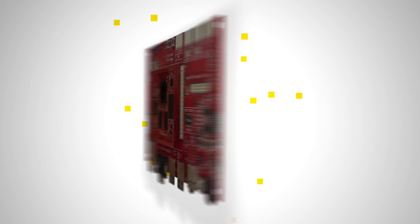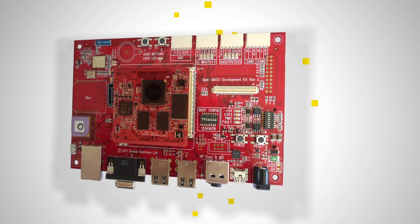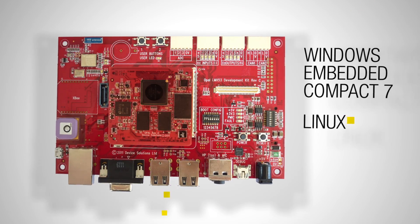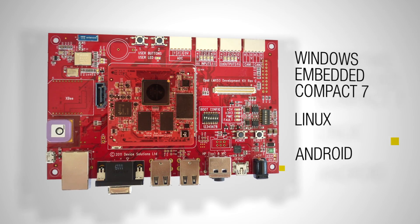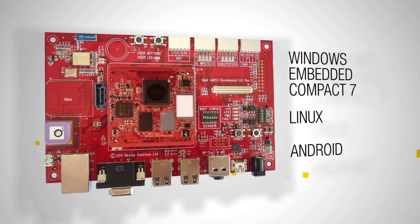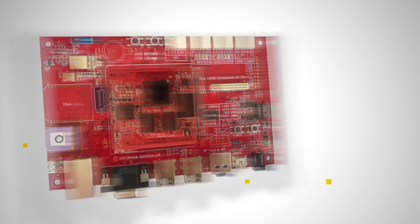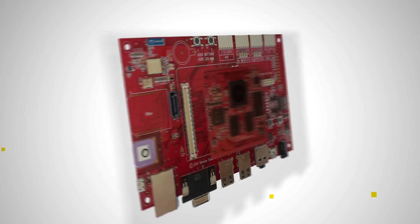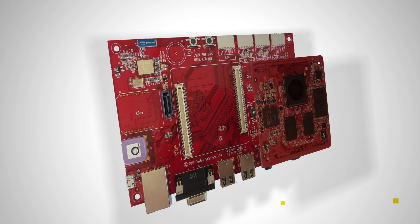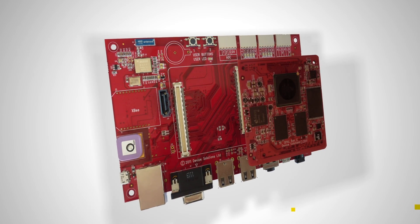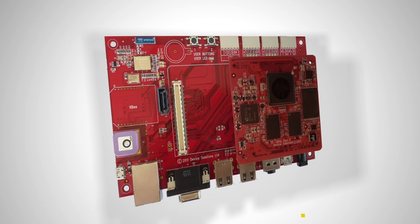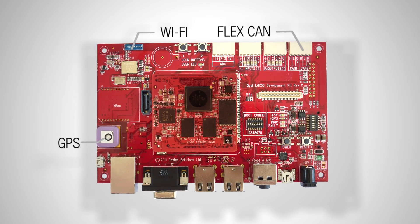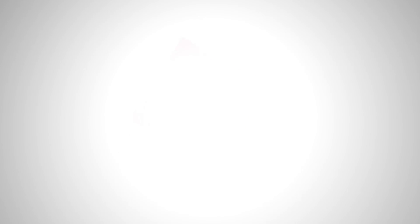And software support for operating systems including Windows Embedded Compact 7, Linux and Android. The Opal Development Kit will get you started quickly. It goes beyond the standard Freescale kits and includes features like Wi-Fi, GPS and FlexCAN.